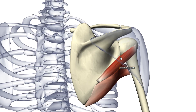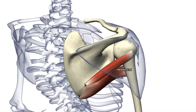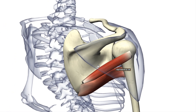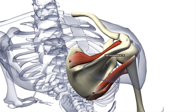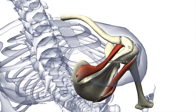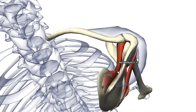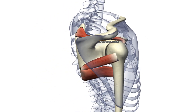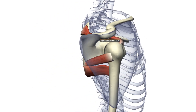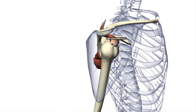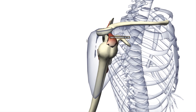Another muscle in the rotator cuff is the supraspinatus muscle. It has the name supraspinatus because it is above the spine. The origin of this muscle is the supraspinatus fossa here.